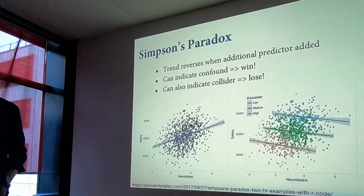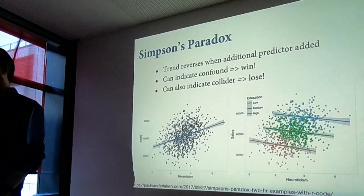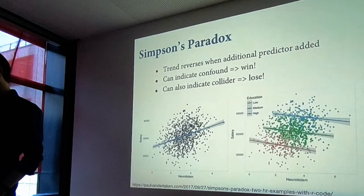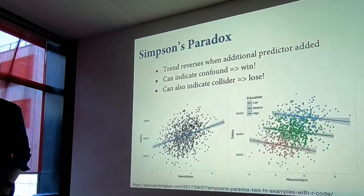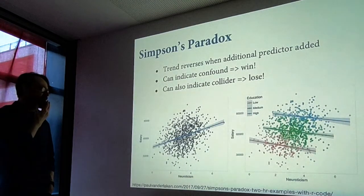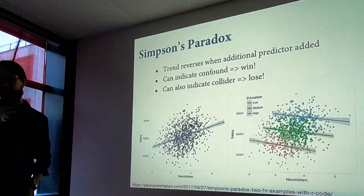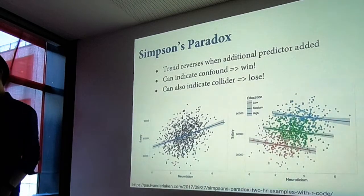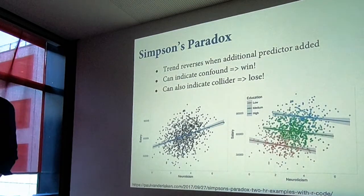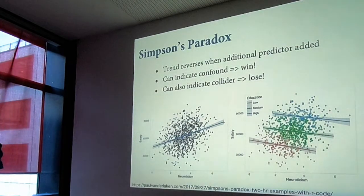That doesn't mean everything is the same — what it does mean is when you learn one kind of fancy GLM, like a binomial regression, you are learning concepts which will transfer to other models as we go.